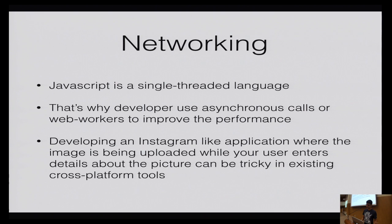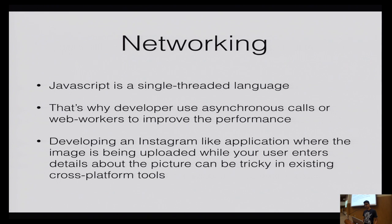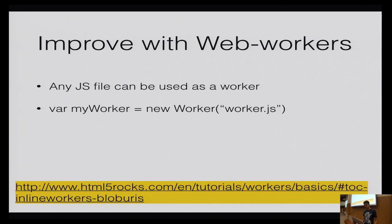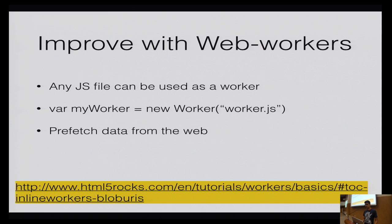You need to use asynchronous calls or web workers to ensure your networking calls are handled properly. Developing an application like Instagram is really difficult with HTML5-based applications. On Instagram, while you're filling a form, it uploads the image to the server in the background — and if you don't post, it's deleted later. That kind of user experience is very hard to achieve through HTML5-based apps. Web workers were introduced in iOS 7; they're part of the JavaScript engine.